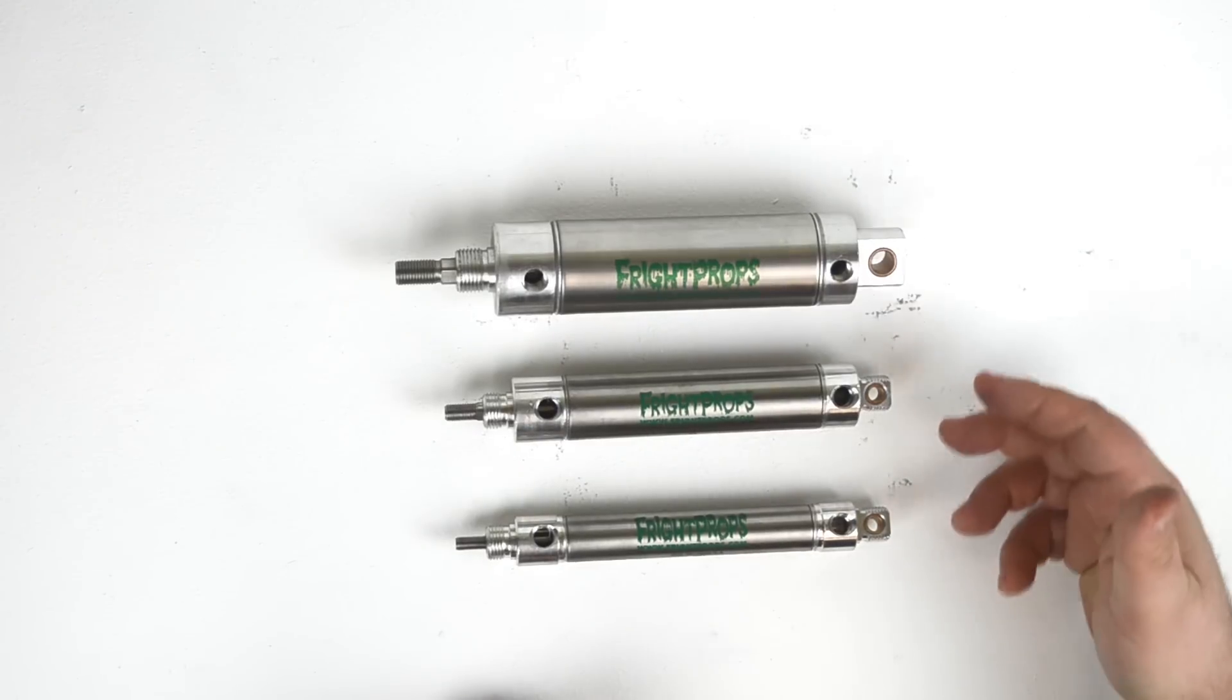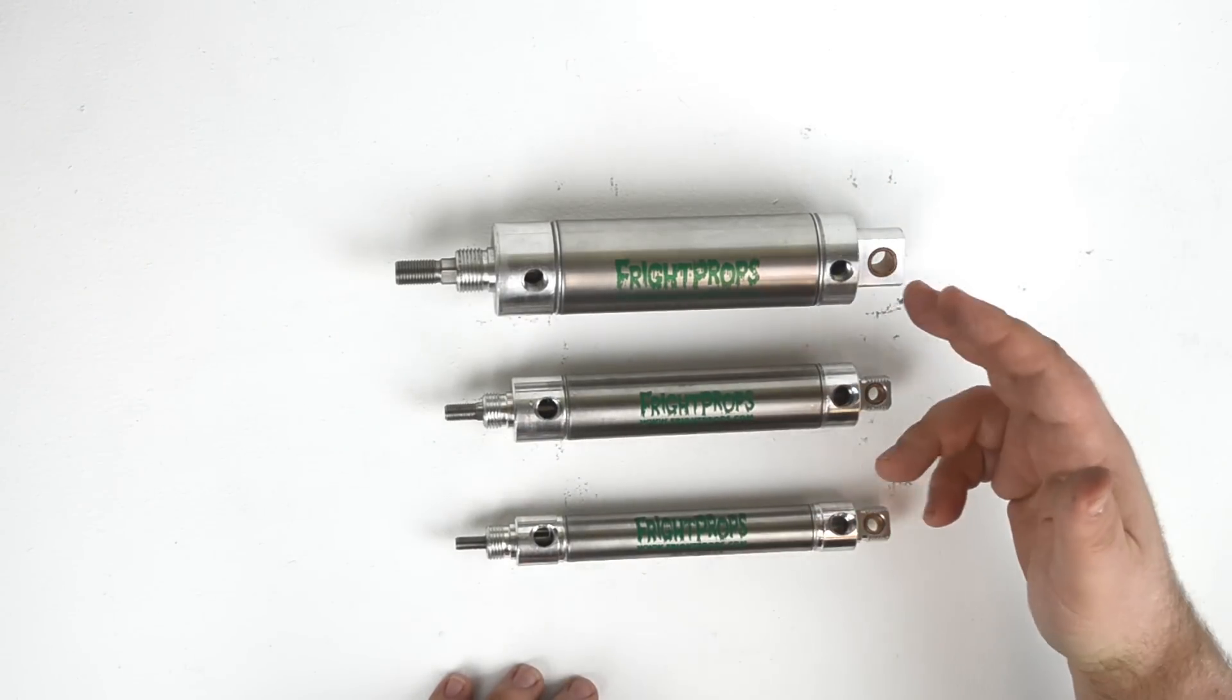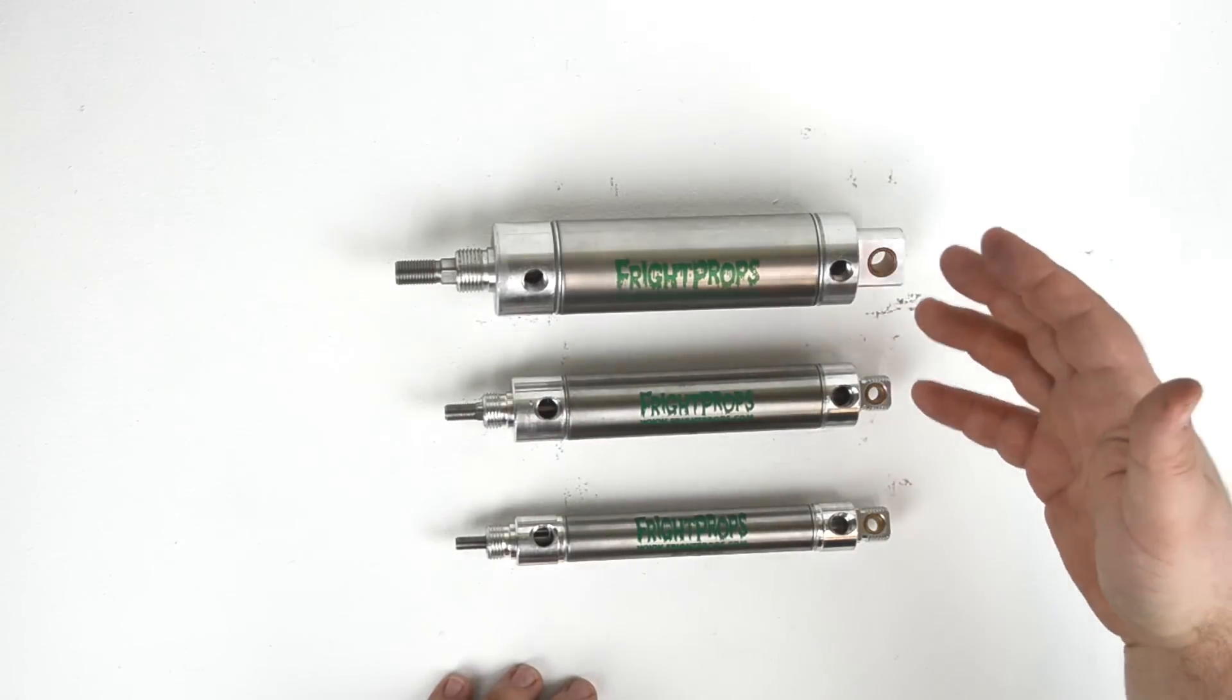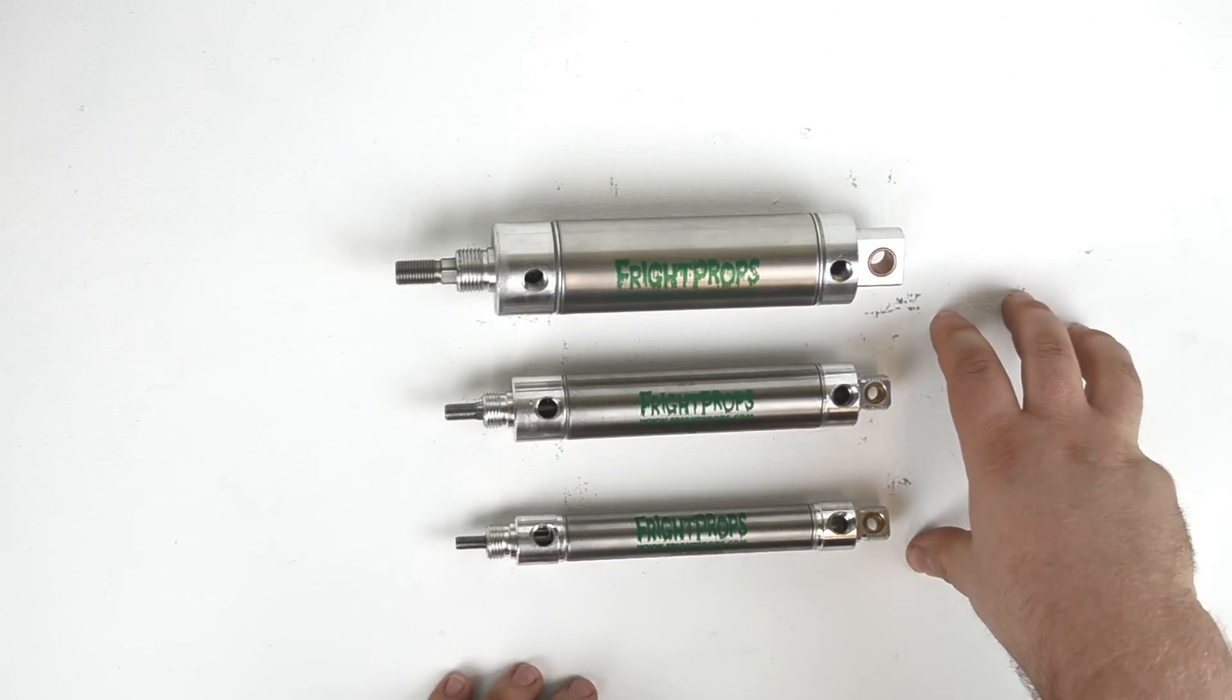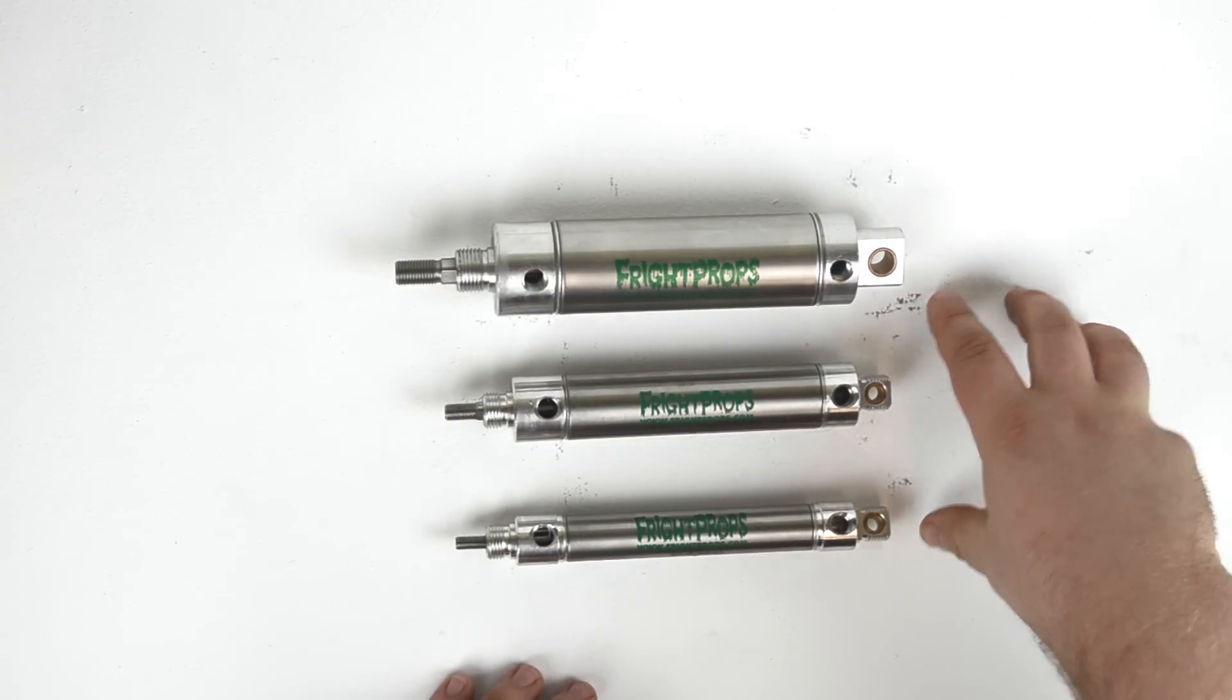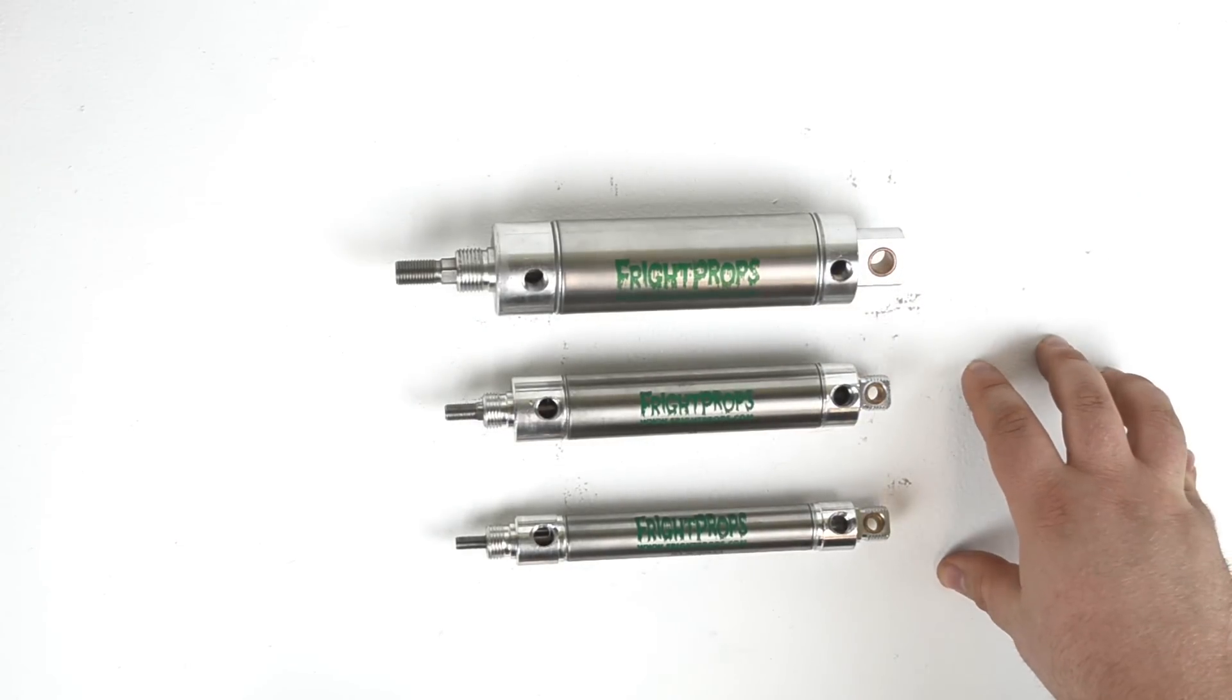All Freiprop cylinders are made of stainless steel, and we offer a range of bore sizes. Those shown here are just an example, but we also go up to much larger cylinders and much smaller to fit any application you might need. The three sizes shown here are the most common in the haunted house industry, which is what we primarily deal with. But if you need something special, just let us know and we'll see if we can find it for you.